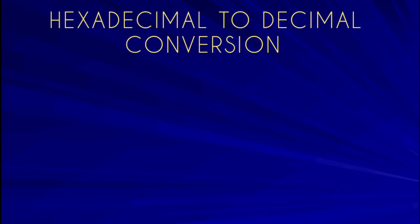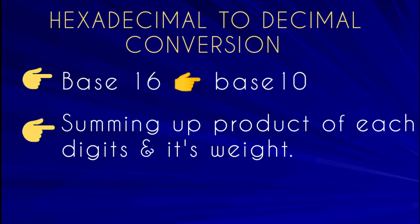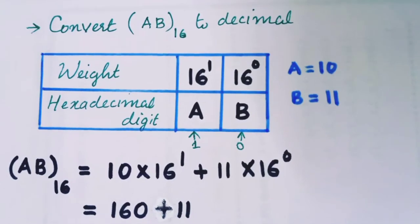Now let's discuss Hexadecimal to Decimal Conversion. We need to convert from Base 16 to Base 10. For each hexadecimal digit, we multiply the digit by its weight. The weights are powers of 16: 16 raise to 0, 16 raise to 1, and so on. Let's take an example.